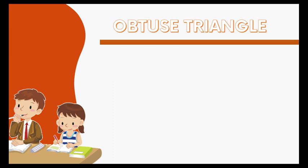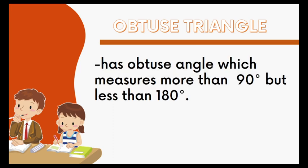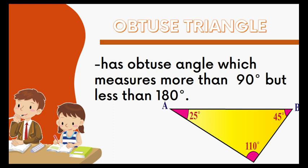The second one is the obtuse triangle. An obtuse triangle has an obtuse angle which measures more than 90 degrees but less than 180 degrees. This is an example of an obtuse triangle. As you can see, there is an obtuse angle which is 110 degrees — more than 90 degrees but less than 180 degrees.